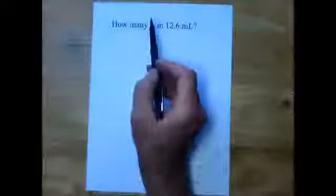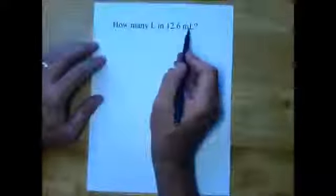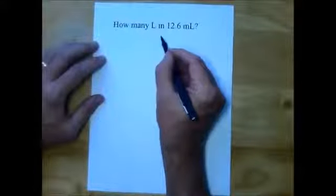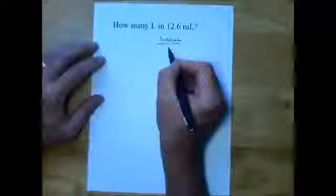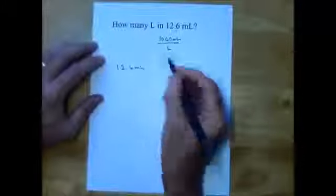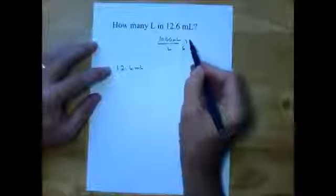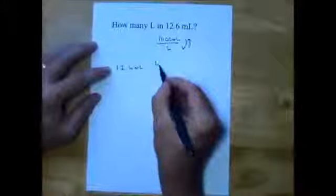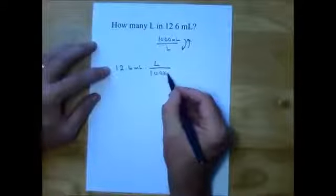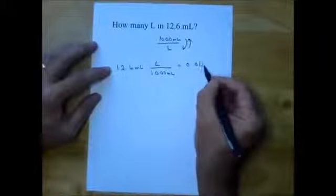Sometimes we want to know how many of the big unit we have in the small unit. Liters is the big unit, milliliters is the small unit. So now we want to go from milliliters to liters. We've already determined the conversion factor is 1,000 milliliters per liter. Starting with 12.6 milliliters, we want to cancel milliliters, so we flip the conversion factor over to liters per 1,000 milliliters. Putting that in the calculator, we get 0.0126 liters. Milliliters cancel, so we're left with liters.